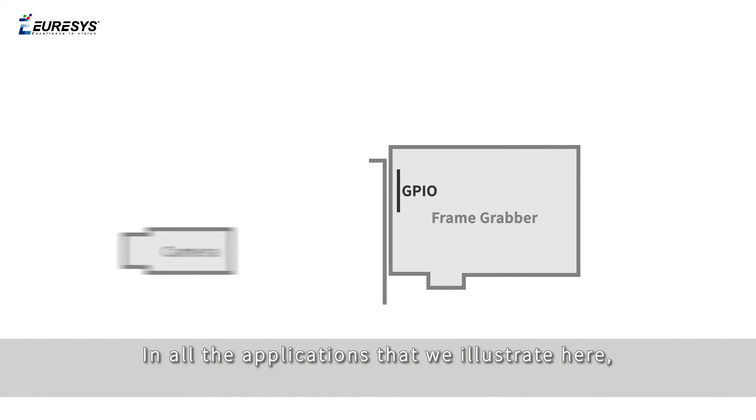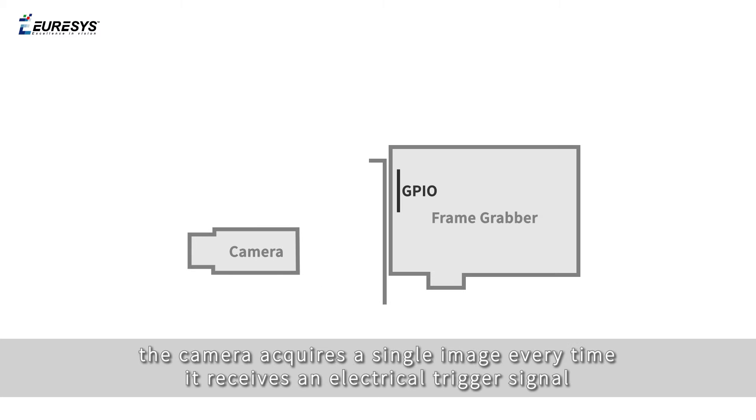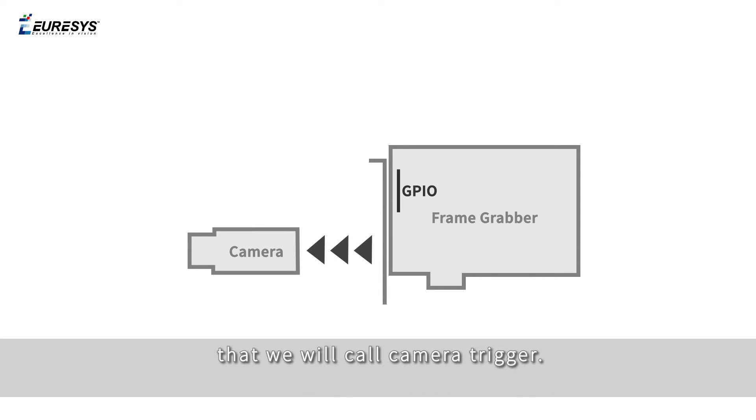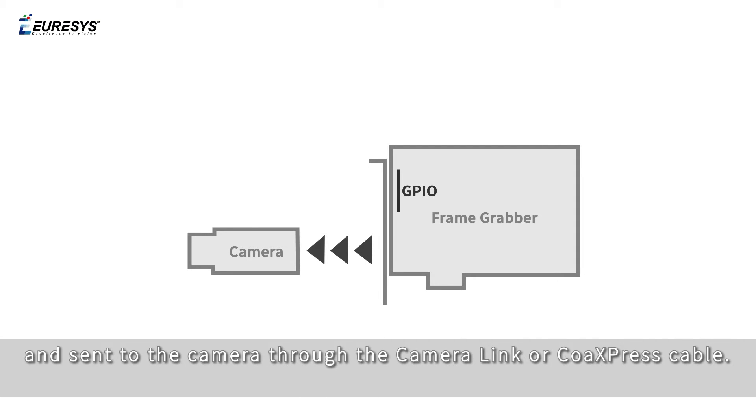In all the applications that we illustrate here, the camera acquires a single image every time it receives an electrical trigger signal that we will call camera trigger. The camera trigger is generated by the frame grabber and sent to the camera through the camera link or coax press cable.